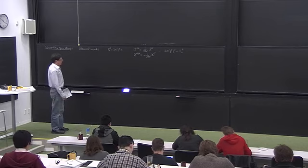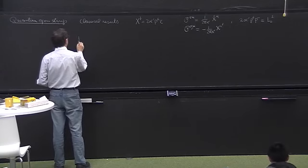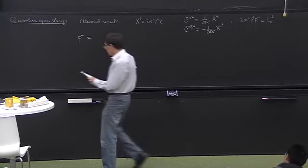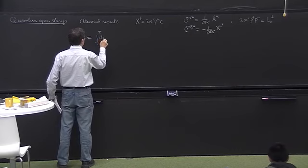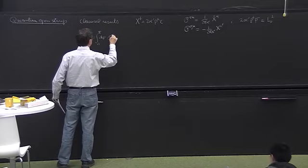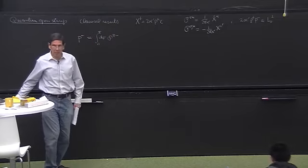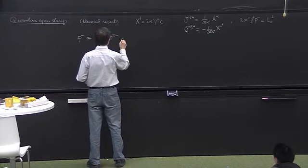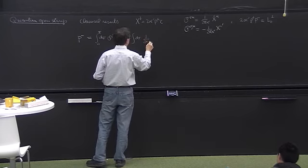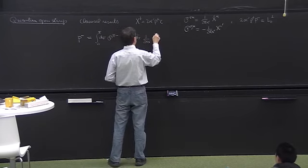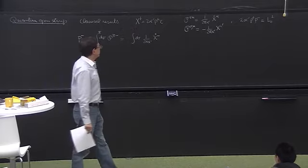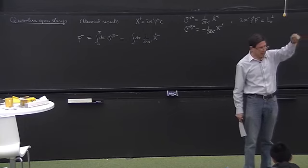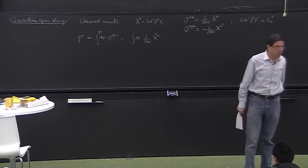Another thing that we discussed was that there were these transverse Virasoro operators, and one in particular was 2 alpha prime p plus p minus equal to L0 perp. Continuing with these things, we also have the p minus for the open string. It's the integral from 0 to pi over the string of the momentum density p tau minus. But p tau minus is nothing else than 1 over 2 pi alpha prime x dot minus. So in the light cone we solved for x minus, and we solved for x dot minus plus minus x prime minus. And from there, we got all our Virasoro operators.